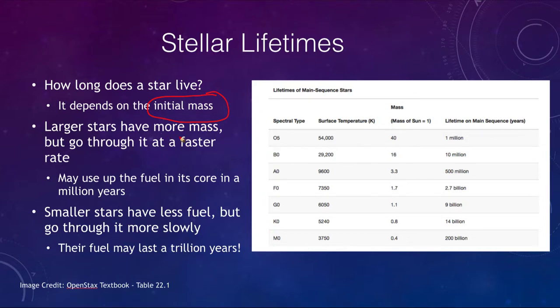A larger star has more mass, more fuel, but it goes through it at a much faster rate. That means that it will use up the fuel in its core in maybe only a few million years. Smaller stars have less fuel, but they go through it far more slowly, and their fuel may last a trillion years.